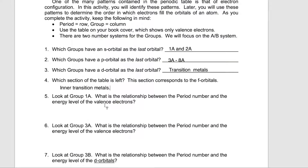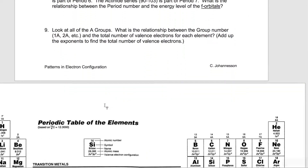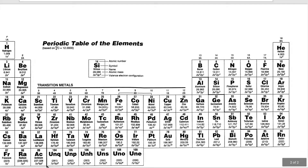Alrighty, look at group 1A. What is the relationship between the period number and the energy level of the valence electron? The valence electrons are the last ones that go in. So the period number right there is 1, and you look at the energy level in that electron configuration and it's 1. Period number and energy level number — they're the same number.